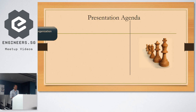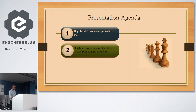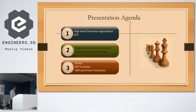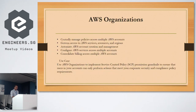Today's presentation agenda covers three things: first, we'll touch base at a high level on organization SCPs — I'm sure most of you are familiar with AWS Organizations. Second, we'll talk about the high level of permission boundaries. Third, we'll do some demos for both topics. I'll go through the slides a bit faster, but all the materials and links will be available.